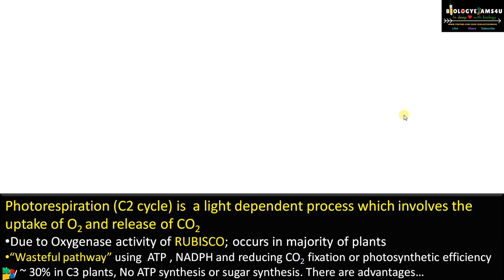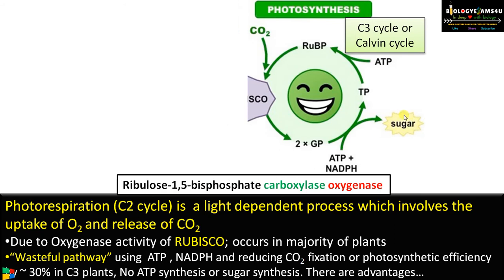Photorespiration is a light-dependent process that involves the uptake of oxygen and release of carbon dioxide, just like our respiration, that occurs in plants. The reason for photorespiration is the oxygenase activity of the enzyme Rubisco.